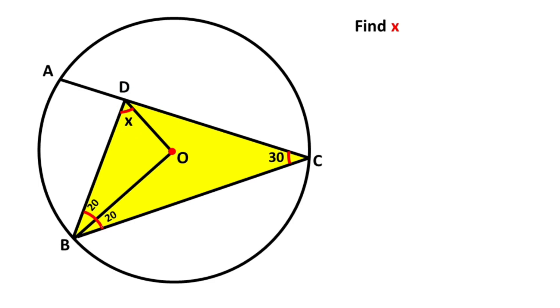First of all, we know that two interior angles equal one exterior angle, so here it must be equal to 70 degrees.